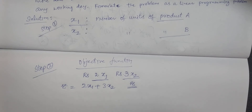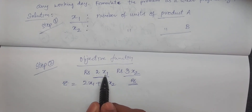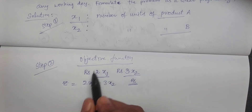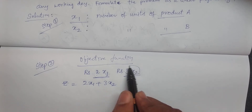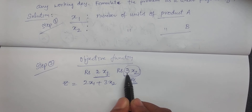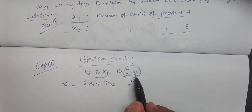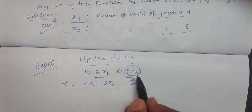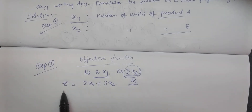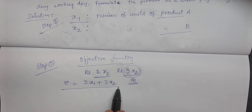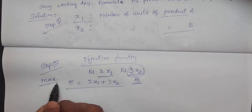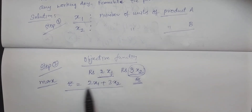For example, if X1 equals 10, then 10 into 2 gives 20 rupees — that is the reason for multiplication. Similarly, on five units of product B, five into three gives 15 rupees profit. Therefore, the total profit Z equals 2X1 plus 3X2, which is to be maximized.